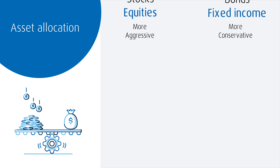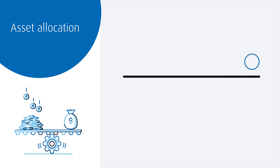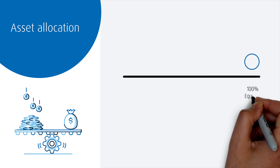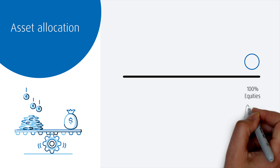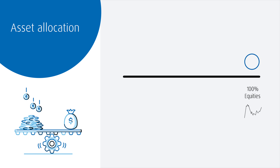If your portfolio was made up entirely of stocks, this would be a 100% allocation to equities. This portfolio would be expected to be quite volatile, meaning that the value would fluctuate quite a bit.